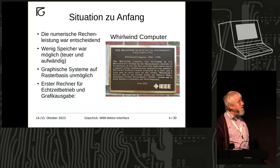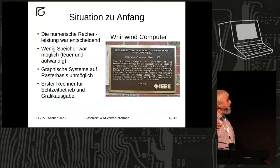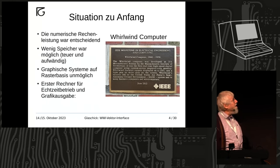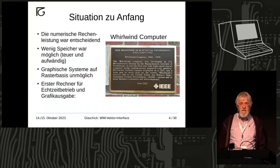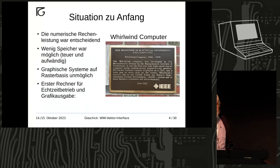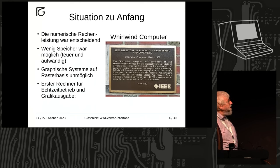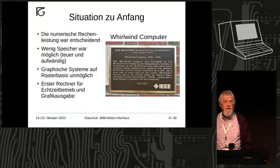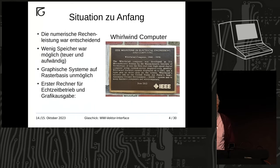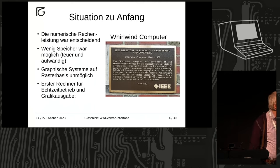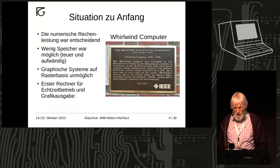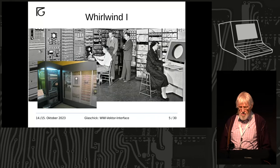Wie war die Situation? Das ist diese Plakette, die Guy erwähnt hat, wo deutlich drinsteht, was der Wildwind eigentlich war. Zu dieser Zeit hat man numerisch gerechnet und erst später kommerziell. Man hatte wenig Speicher. Grafische Systeme auf Rasterbasis waren unmöglich — mit 256 Wörtern kann ich kein Raster von 4K darstellen. Der Wildwind war der erste Rechner, der für Echtzeitbetrieb und Grafikausgabe gedacht war.